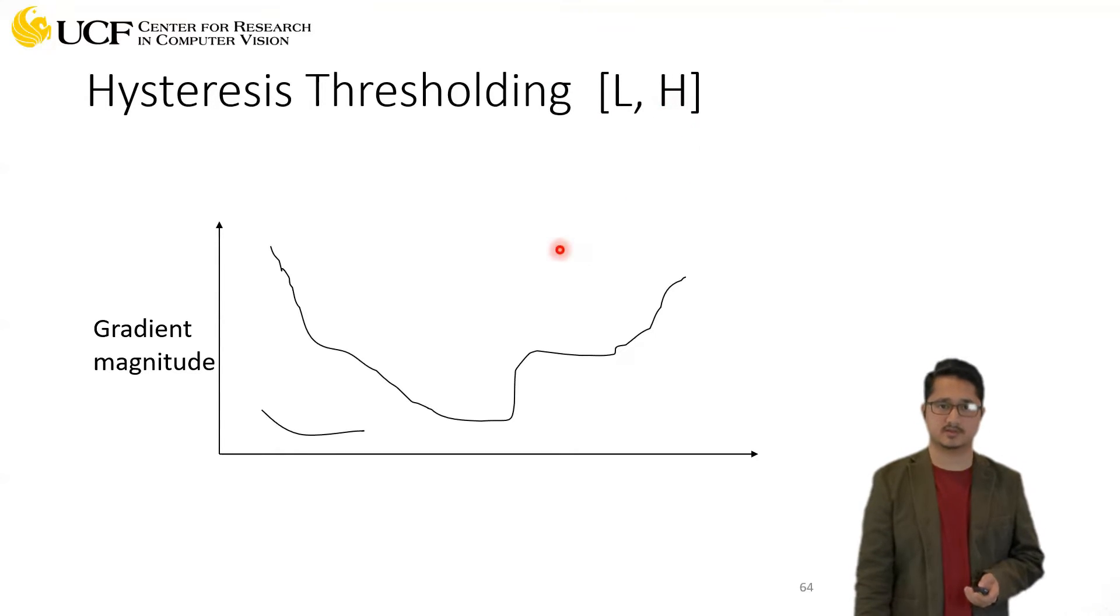Let's understand how this hysteresis thresholding works. The x-axis represents different pixel locations in your image, and the y-axis is the gradient magnitude. Your lower threshold is somewhere around the blue line.